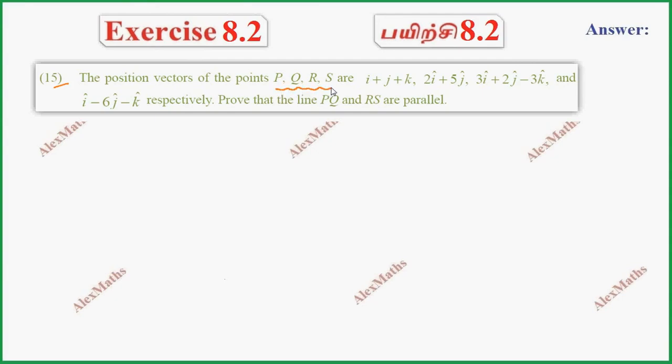The position vectors of the points P, Q, R, S - we are going to get the position vectors of the points P, Q, R, S with respect to the origin.